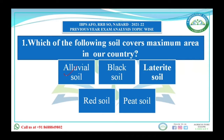Alluvial soil is the most important type of soil found in our country. It is highly fertile soil and covers an area of near about 143 million square kilometers, meaning about 43 percent of the soil in our country is alluvial soil. It is also known as deposited or transported soil, as it is transported and deposited by rivers and streams.